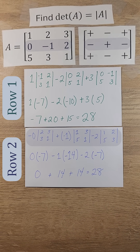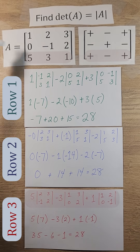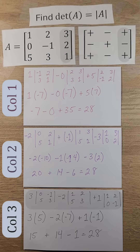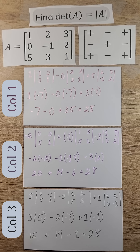If we use the second row, we would also get 28. If we use the third row, we would also get 28. In fact, if we use the first, second, or third columns, we would also get 28. Using any row or column to calculate our determinant will give us a result of 28.